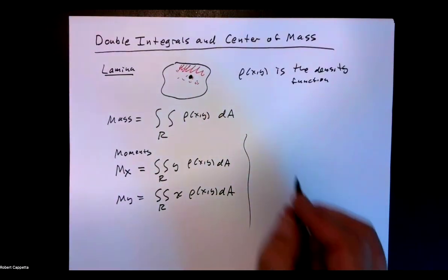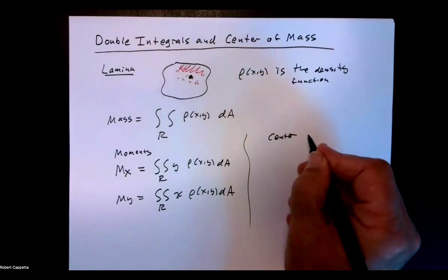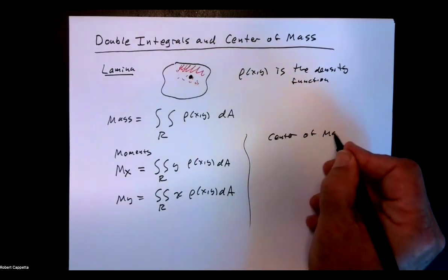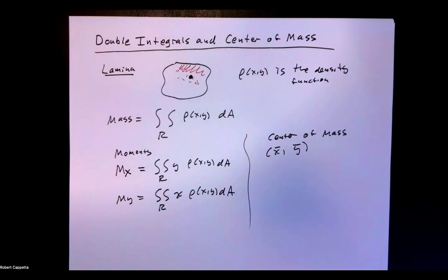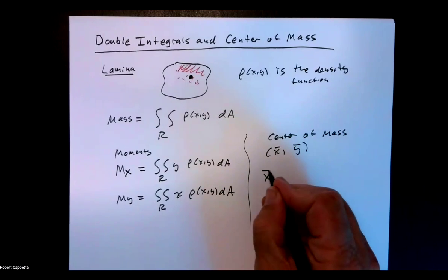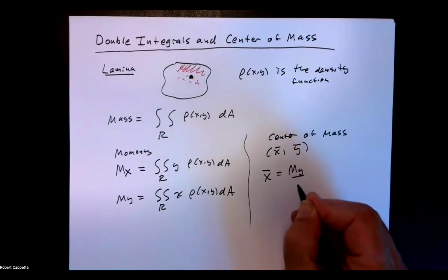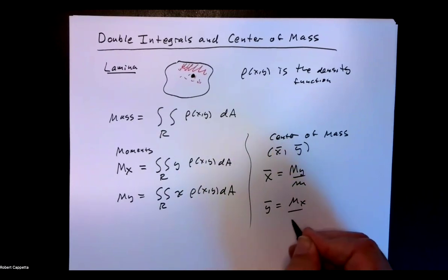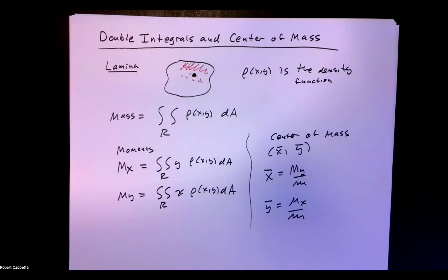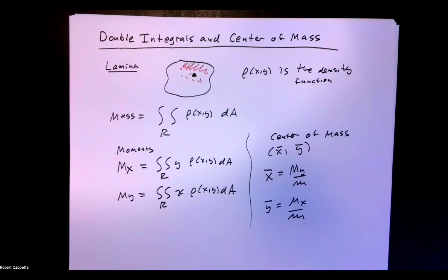The center of mass is typically written as x̄, ȳ — like the average x, average y in statistics notation. x̄ is M sub y divided by the mass, and ȳ is M sub x divided by the mass. Finding the center of mass lets us consider everything happening at a single point, which is an important concept in physics.